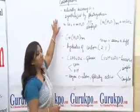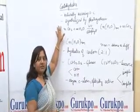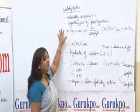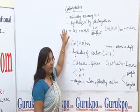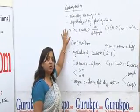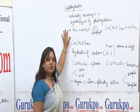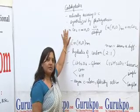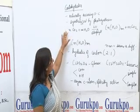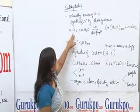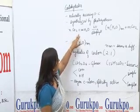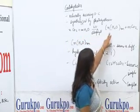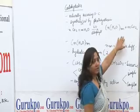As we all know, the word carbo and hydrates — carbohydrates are the hydrates of carbon. These are naturally occurring organic compounds, and they can also be synthesized in the presence of carbon dioxide, water, and chlorophyll by plants. This process is called photosynthesis, and the general formula is CO2 plus H2O, in the presence of sunlight, giving carbohydrates.